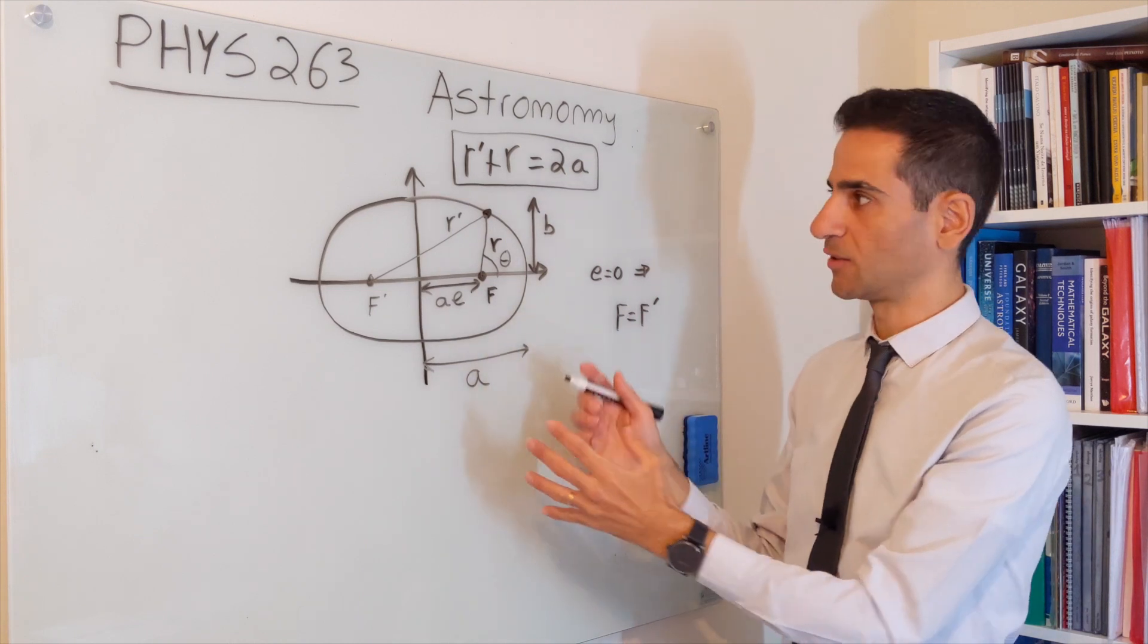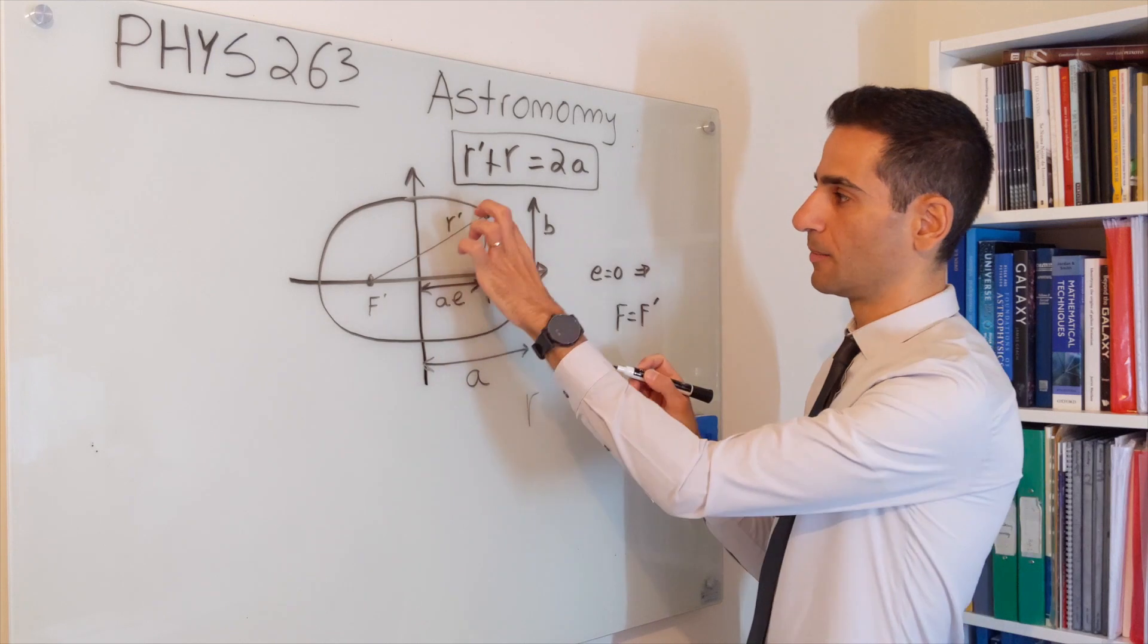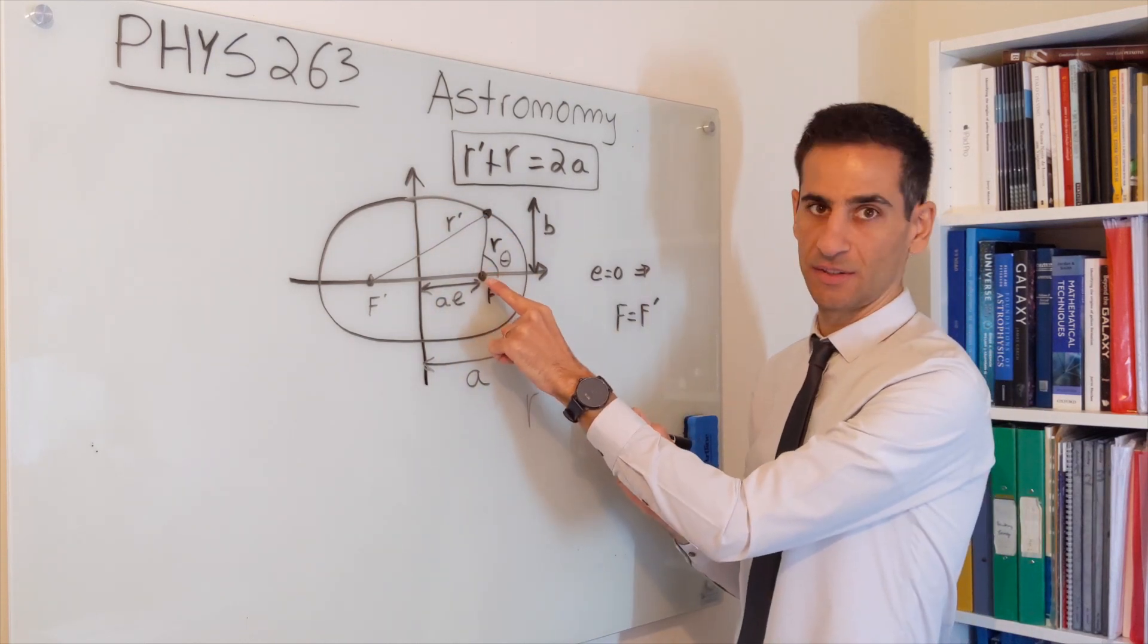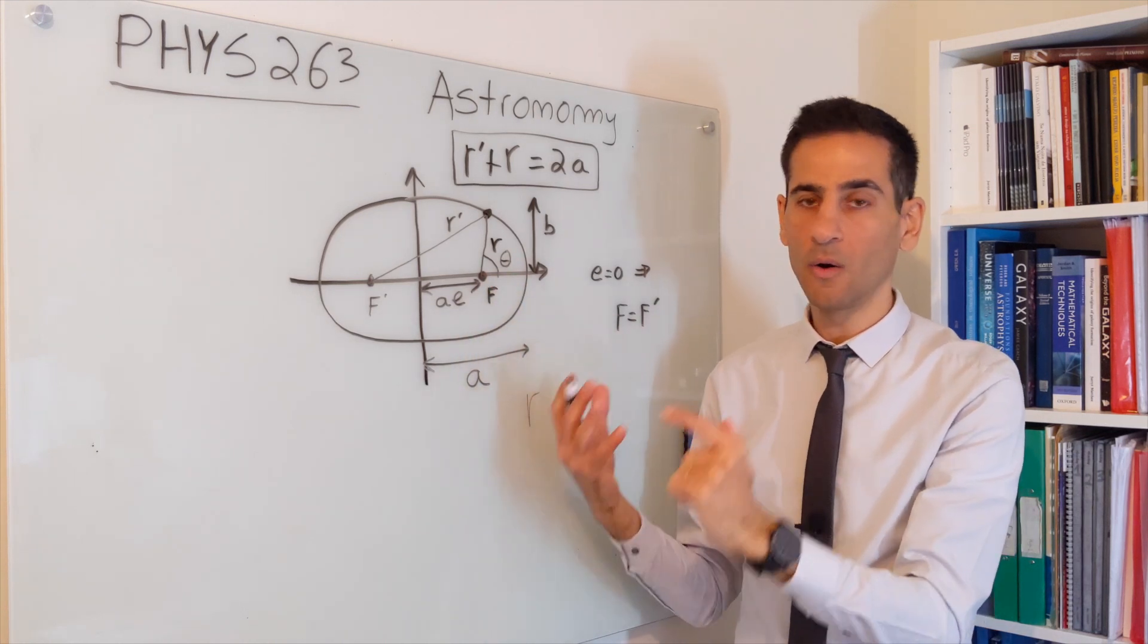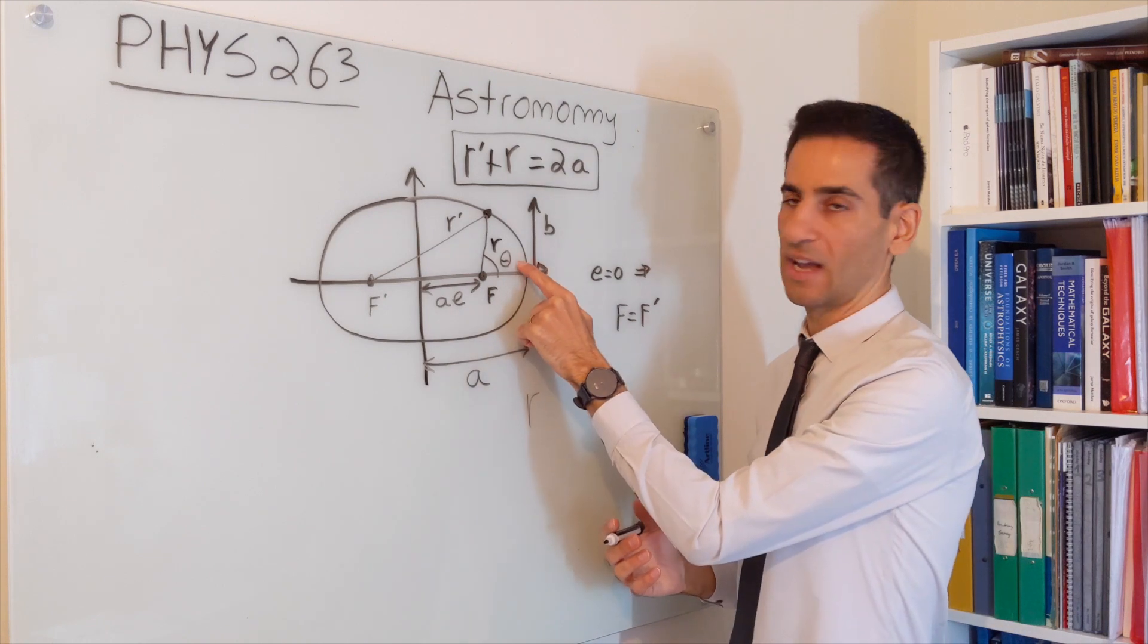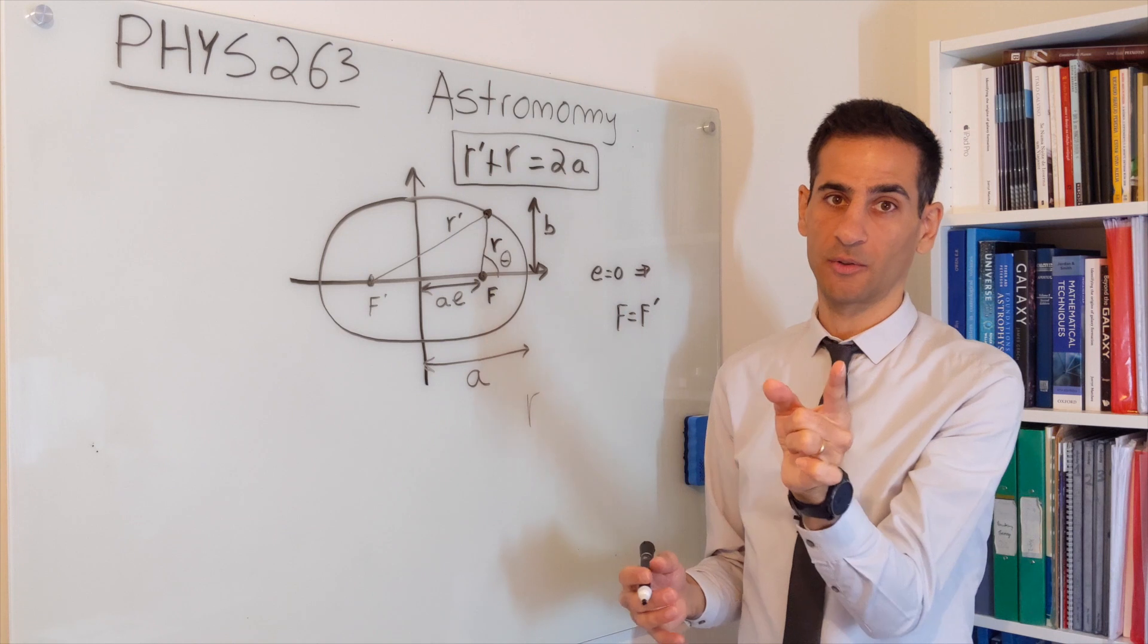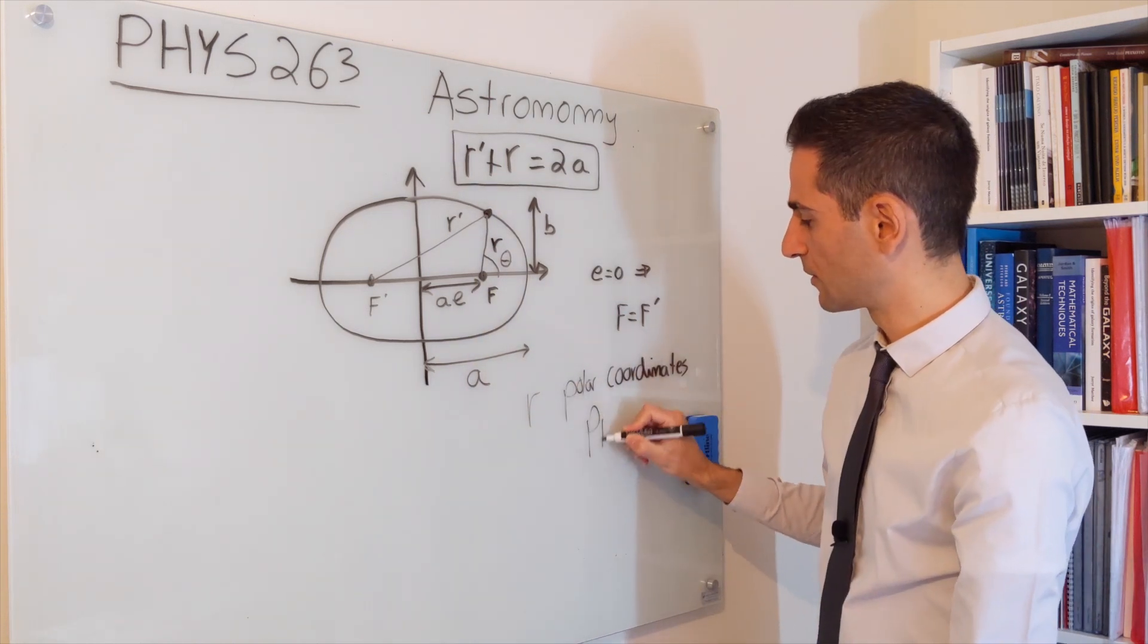This is important because this r will be the distance from the focus—this is where we're going to have our astronomical objects such as the sun or the earth—and this is the angle that we're going to use. So in practice, we'll be able to use polar coordinates, remember from PHYS 111.